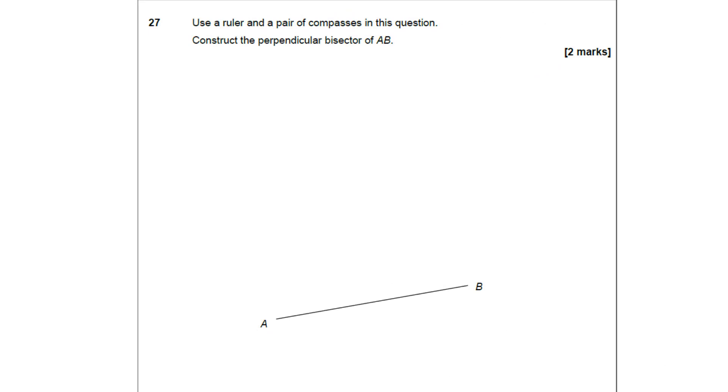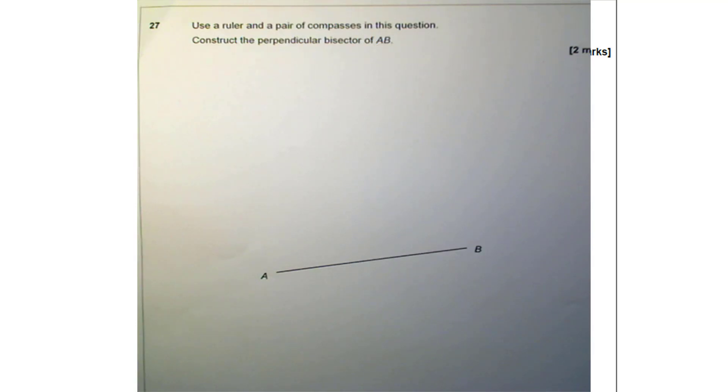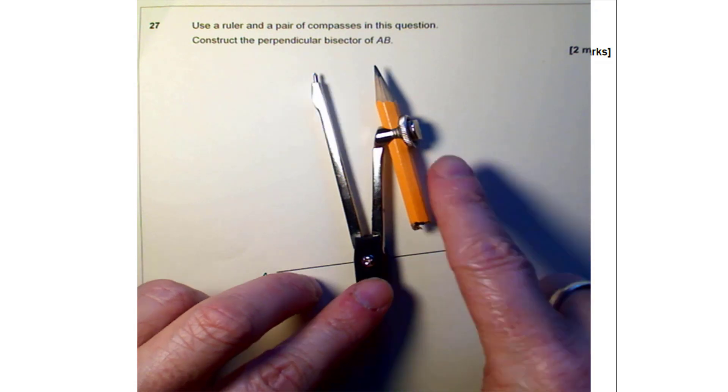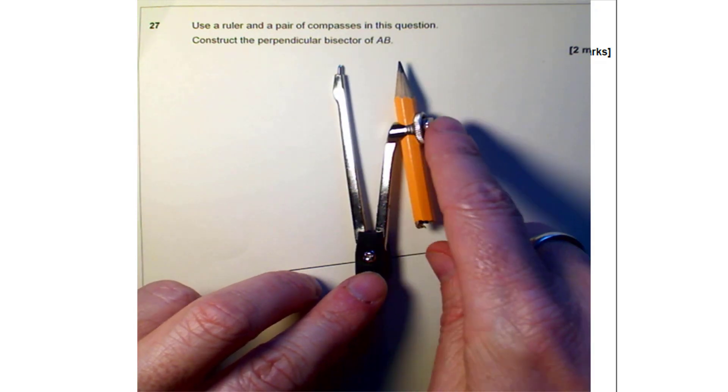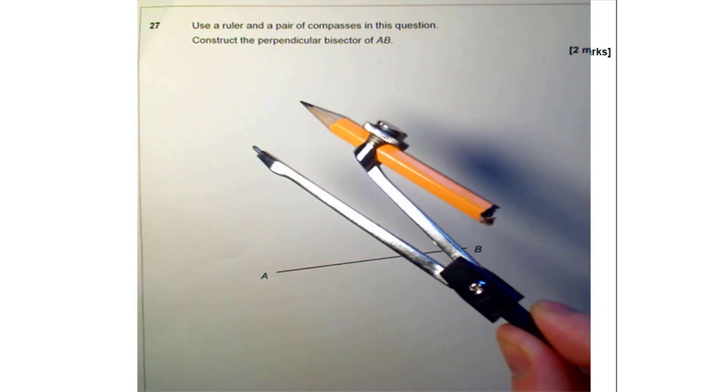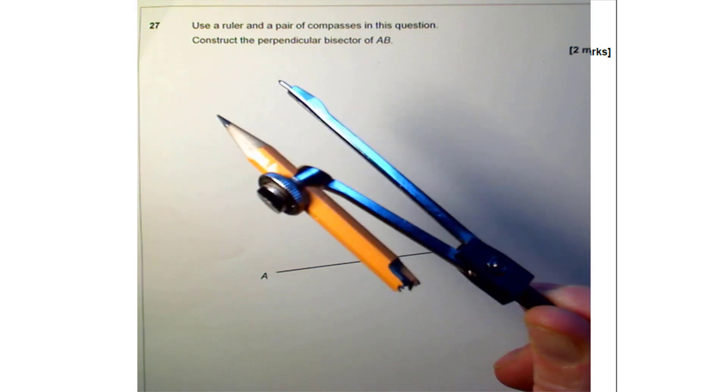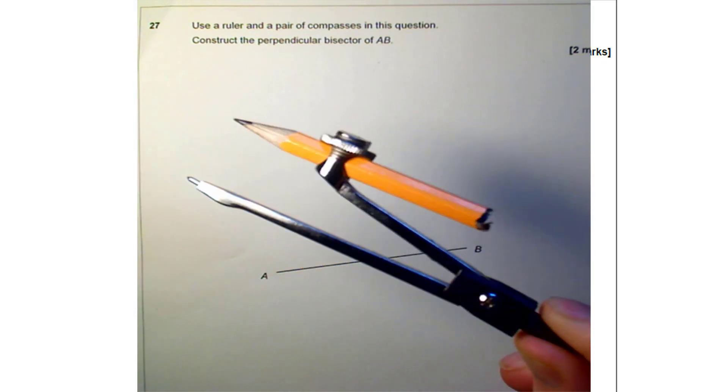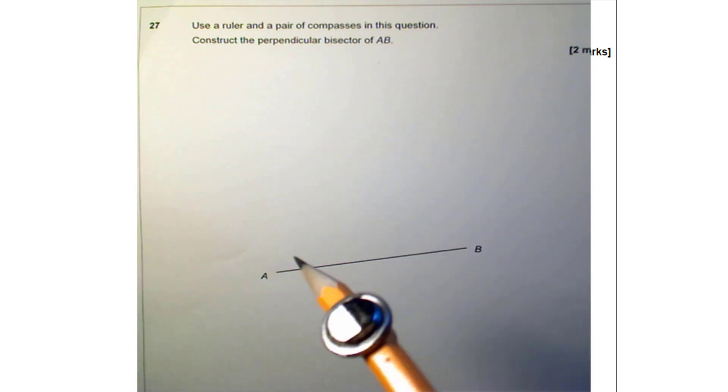Use a ruler and a pair of compasses in this question. Construct the perpendicular bisector of AB. So first things first, with your compasses make sure you've got a small pencil. It needs to be small enough so that it doesn't bump into your fingers when you turn it around, otherwise you're not going to be able to draw nice smooth curves.